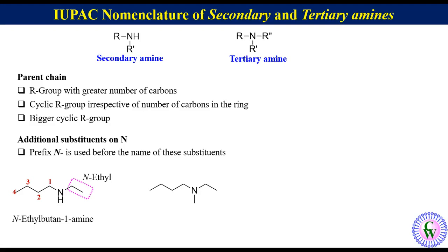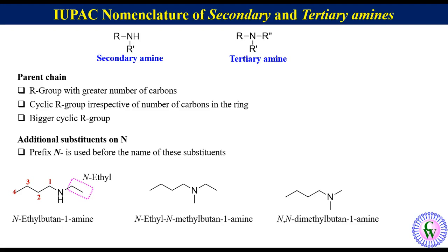Another example: ethylmethylbutylamine. In this molecule, the 4-carbon R group is the parent chain. Other than this, there are 2 more R groups: N-ethyl and a methyl. So the IUPAC name will be N-ethyl-N-methylbutan-1-amine. For dimethylbutylamine, the IUPAC name will be N,N-dimethylbutan-1-amine.